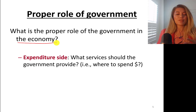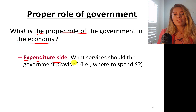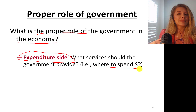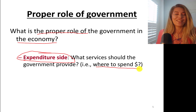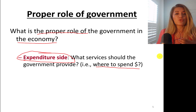We are going to approach this class with objective information. On the expenditure side, the question is: what services should the government provide? Where should the government spend money? For instance, should government pay for my Taylor Swift tickets? Long story short — should government take care of stray dogs? Yes, local governments do that. Should government take care of roads? Yes, our answer usually is yes.